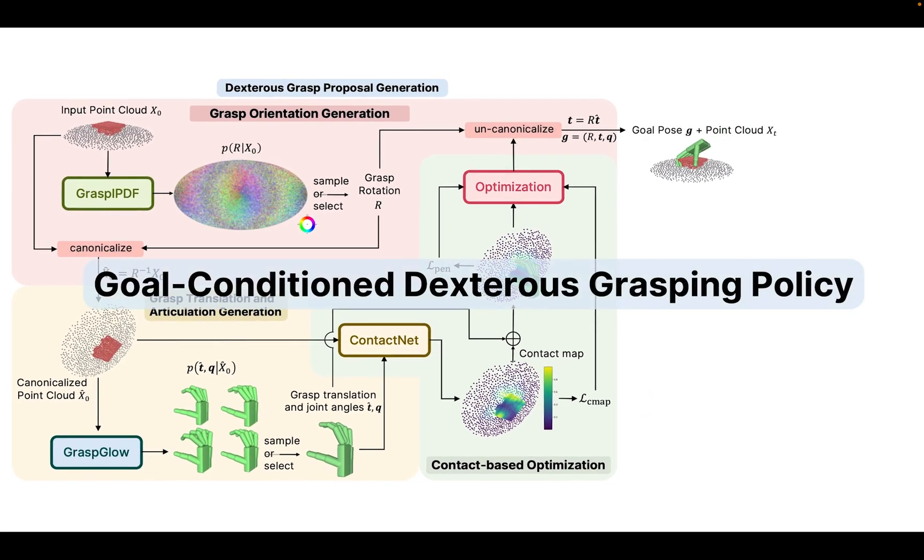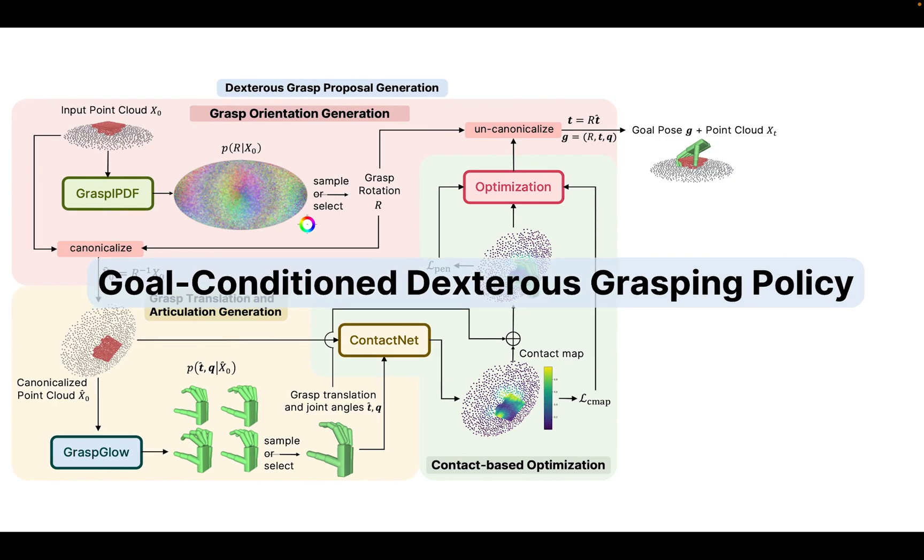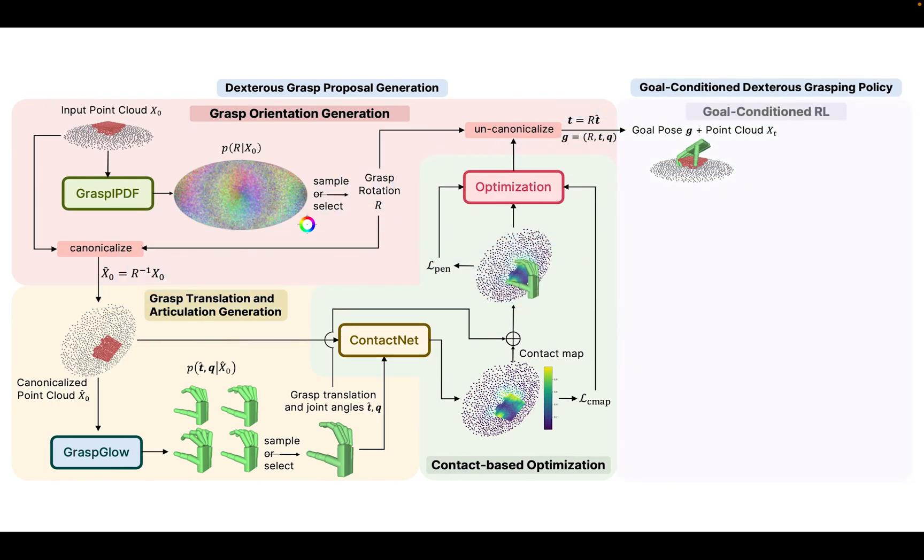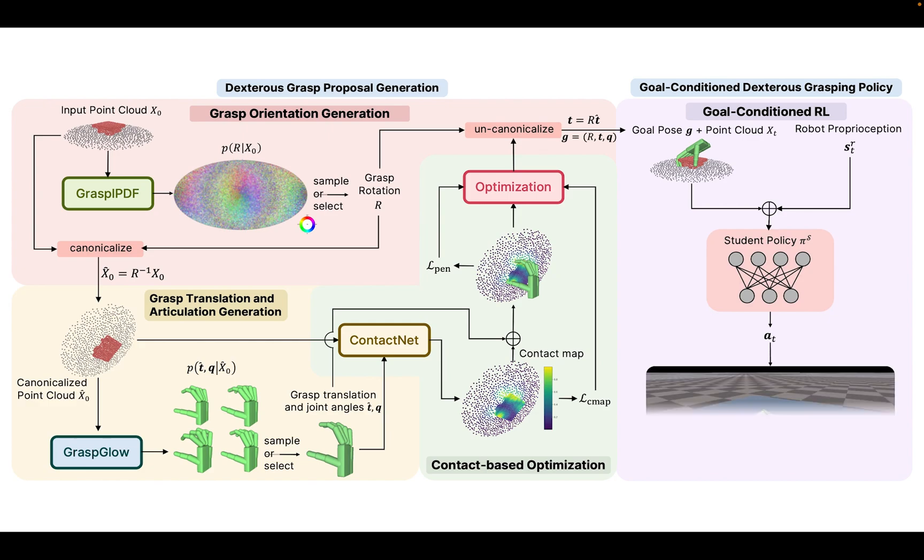The second stage is the goal condition dexterous grasping policy. The target hand pose from the first stage, the point cloud, and the robot proprioception are the inputs to the policy network. Then, the output actions will guide the hand to grasp the object in the simulator.